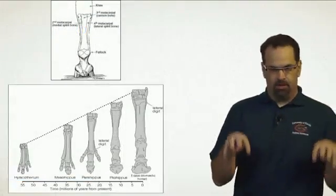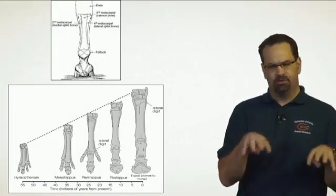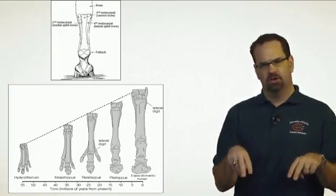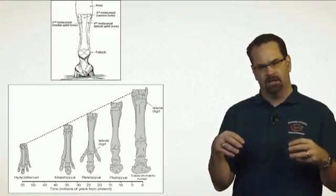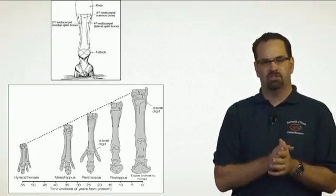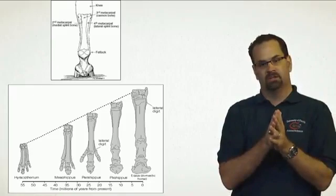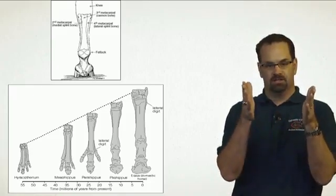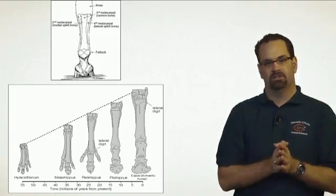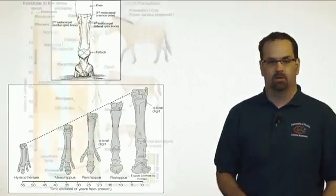The Eohippus or Hyracotherium was a four-toed animal. Over time it went to three toes, and then those toes started to migrate up the leg to one toe. The top picture shows a modern horse or equid — zebra, donkey — that's what their lower legs look like. You'll see the splint bones are remnants of the toes that their earlier relatives had. So we can see direct evidence of this in our modern day horses.